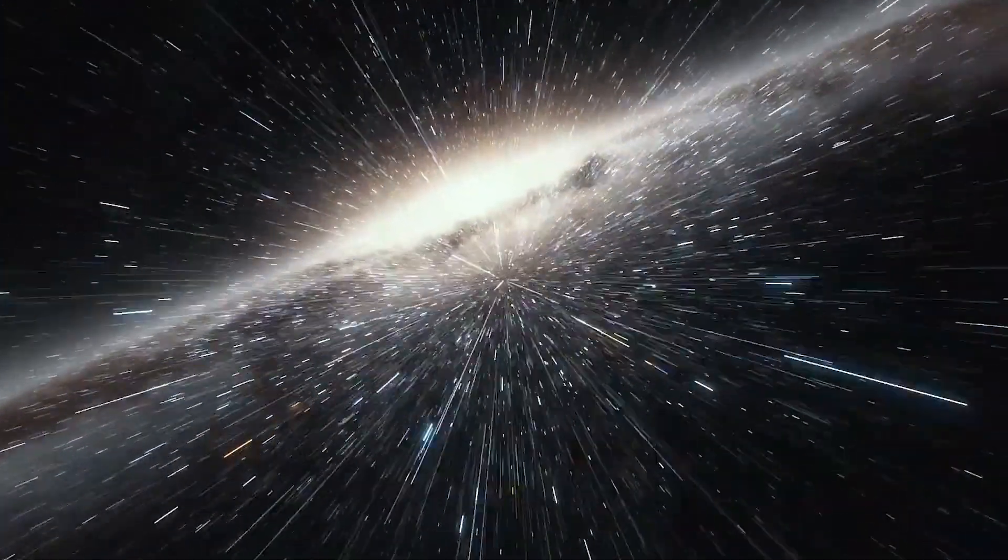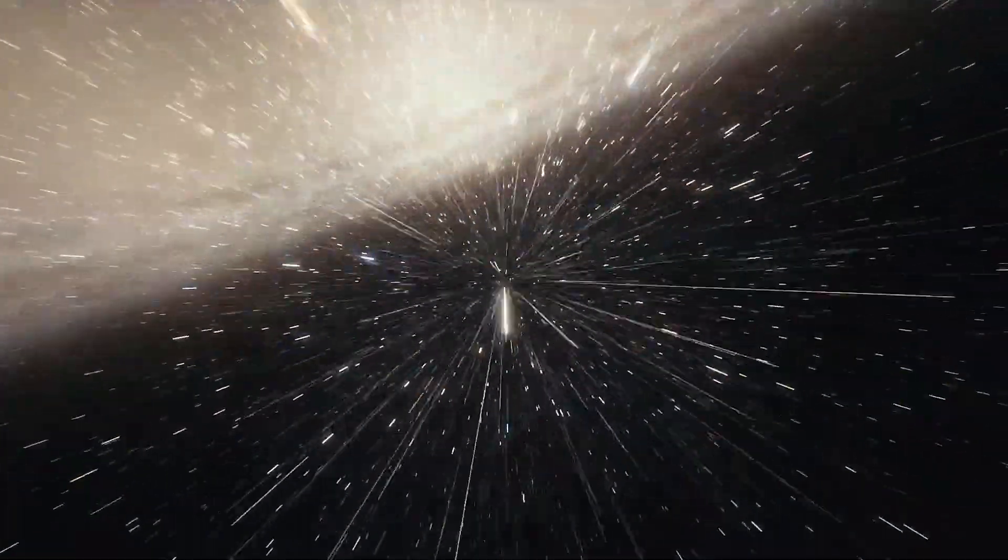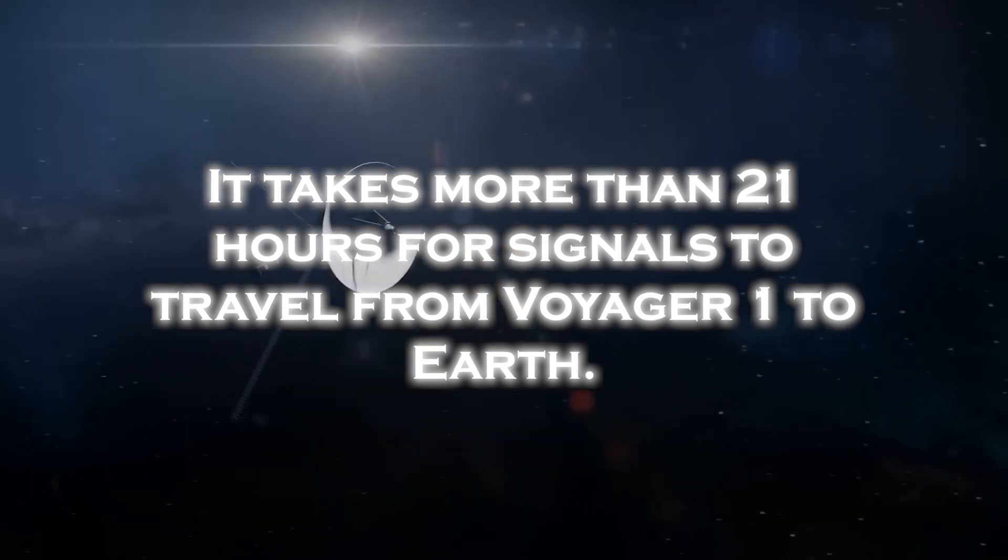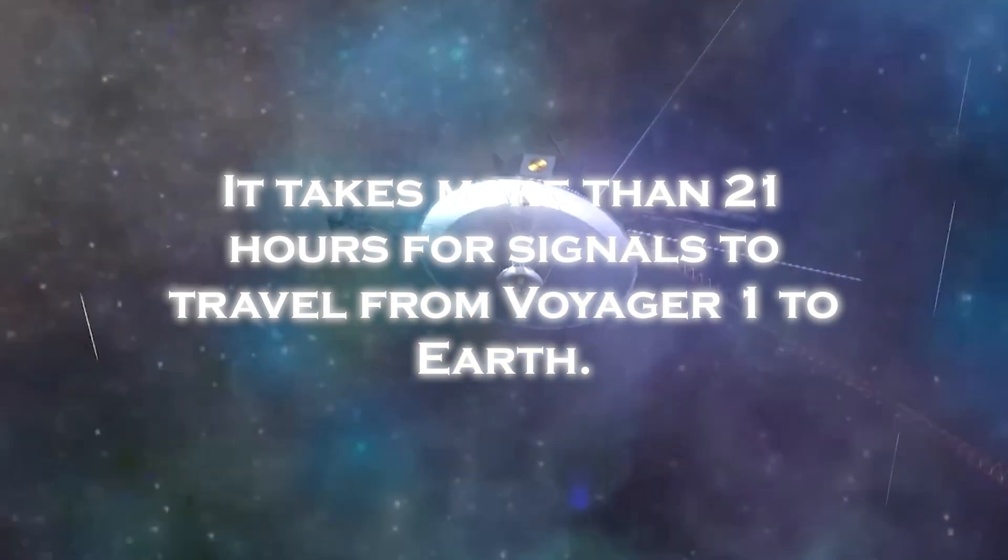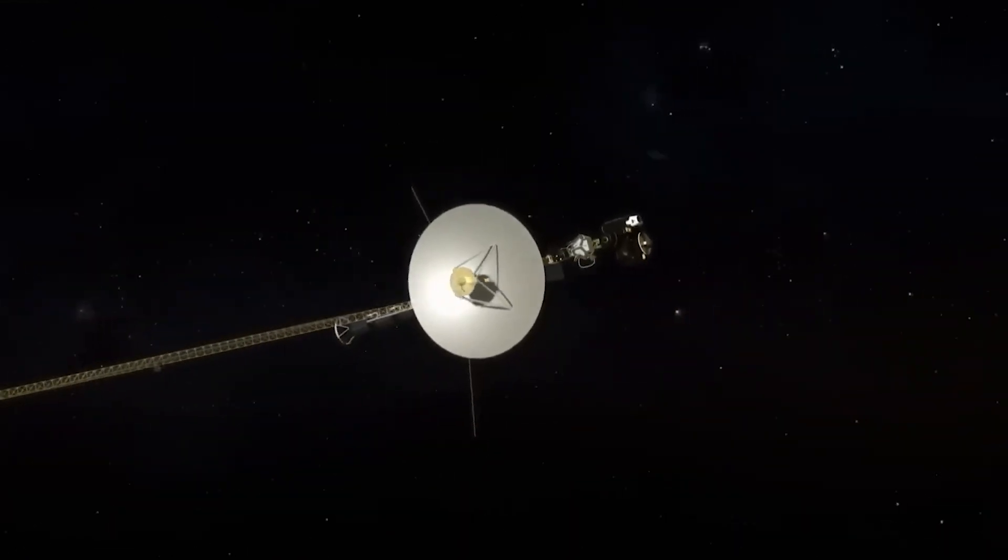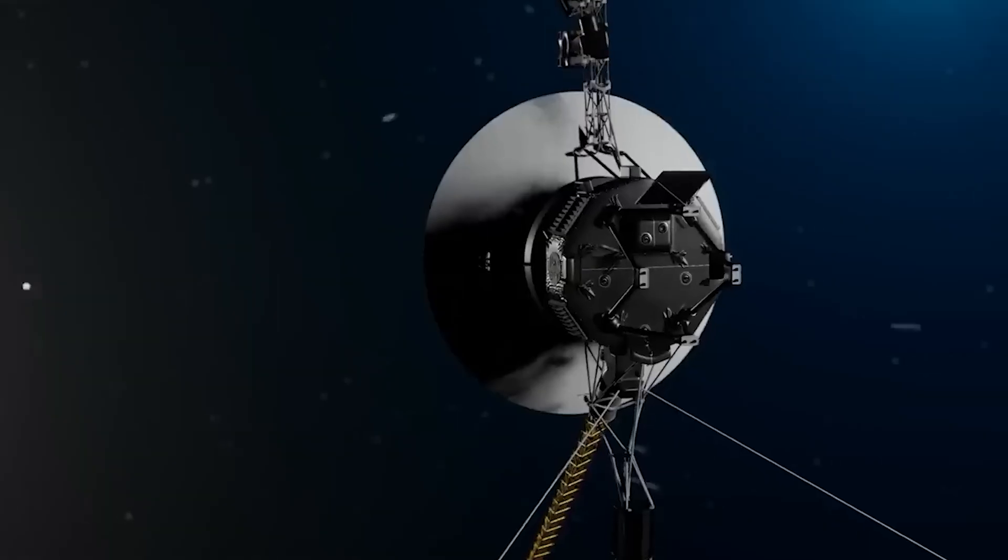As the spacecraft ventures into interstellar space, Voyager 1's signal strength has weakened. It takes more than 21 hours for signals to travel from Voyager to Earth. The weak signal, combined with interference from background noise, makes it difficult to transmit and receive data.